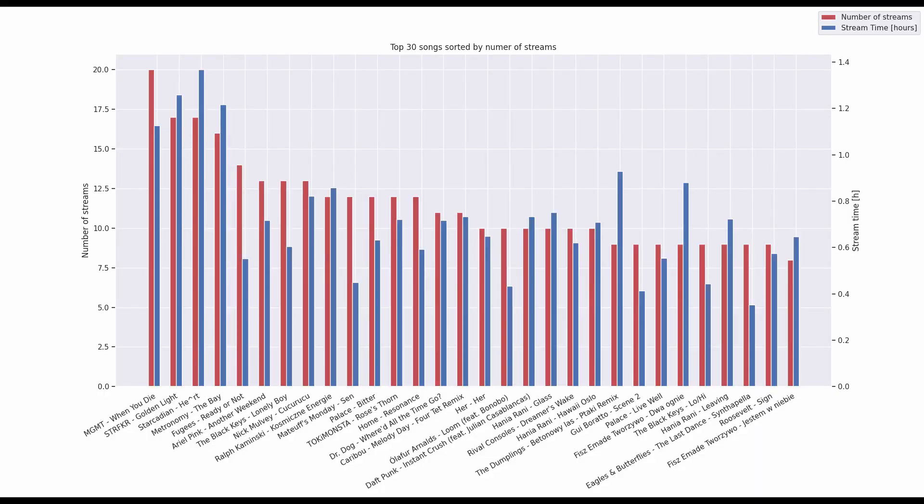Now it's time for something you've all been waiting for: the top 30 songs sorted by number of streams. My top song is MGMT, 'When You Die', and I listened to it about 20 times, which is about 1.4 hours. I know that 20 streams doesn't sound like a lot, but I usually listen to whole albums or playlists — I don't just put one song on replay forever. I think this sums up this whole idea of Spotify data analysis pretty well. My Python script for these six charts is available on my GitHub or GitLab repo — check out the description for that. And if you liked it, show me some love in the comments or just subscribe. I really appreciate it. Also, I need 1,000 subscribers. Thanks for watching.